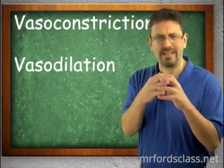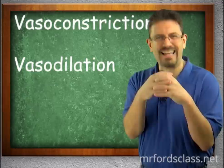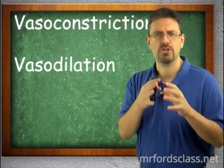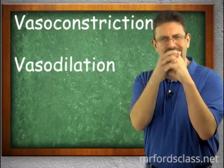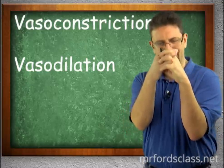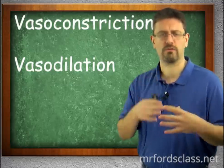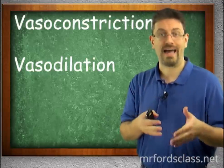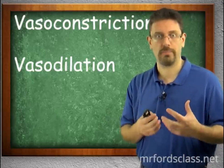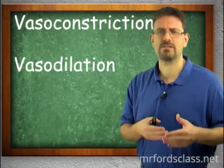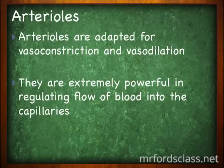Arterioles are adapted for vasoconstriction and vasodilation. Vasoconstriction is the blood vessel getting smaller — like a boa constrictor tightening up. Vasodilation is making the vessel wider, like dilating your pupils at an eye exam. The arterioles are very powerful in controlling blood flow. They will vasodilate or vasoconstrict using that smooth muscle we discussed earlier.